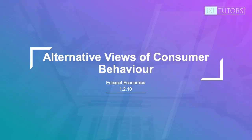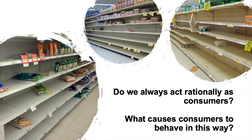The new topic we're going to look at today is called Alternative Views of Consumer Behavior — that's section 1.2. Think about consumers and the way that they shop, the way that they buy things. Do we think that they always act rationally, and what causes consumers to behave in the way that they do?